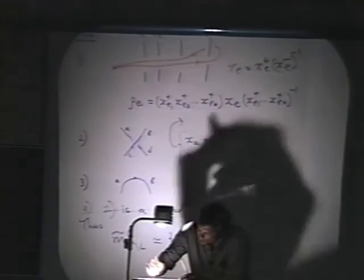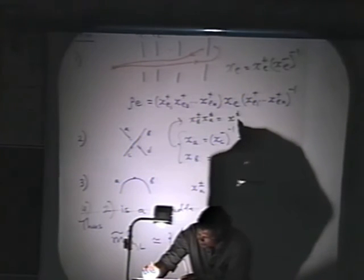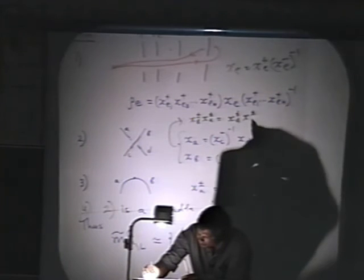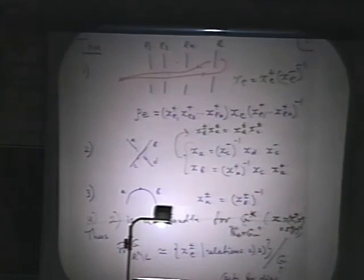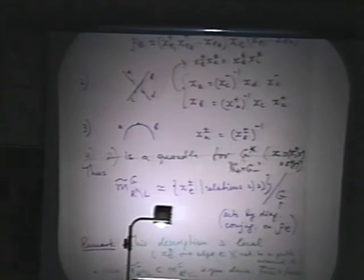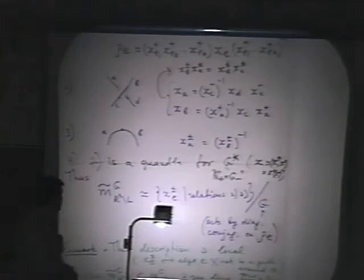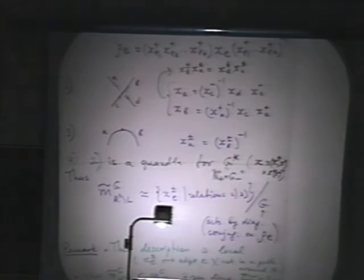The same relations can be written as: x-plus-minus-B times x-plus-minus-A equals x-plus-minus-C times x-plus-minus-C, using this local parameterization. These local parameters assigned to edges look like G-star flat connections combinatorially. Then there is this description of the open dense subset in the moduli space: assign elements x-plus-minus-E to the edges of the diagram, provided they satisfy these relations, then take the quotient by the diagonal action of G by conjugations on these elements that represent π1.